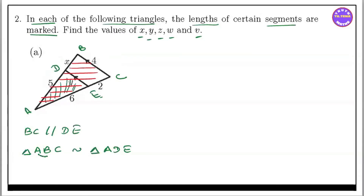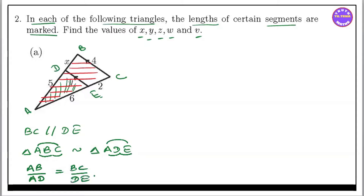We have to look at AB by AD, BC by DE, AC by AE. So we have to look at AB by AD equal to BC by DE equal to AC by AE.